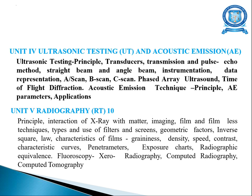Unit 5 covers radiography, including imaging film and filmless techniques, types and screens, geometric factors, inverse square law, characteristics of films such as sensitivity, speed, and contrast, different types of penetrometers, exposure charts, fluoroscopy, zero radiography, computed radiography, and computed tomography.